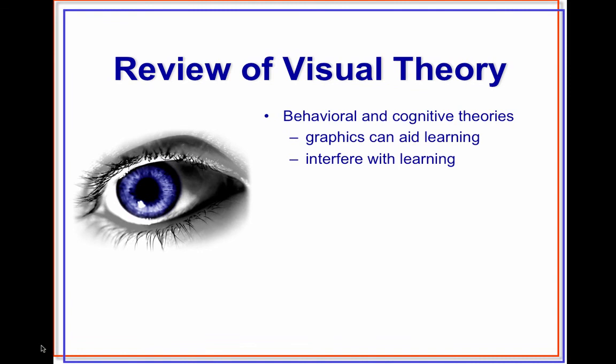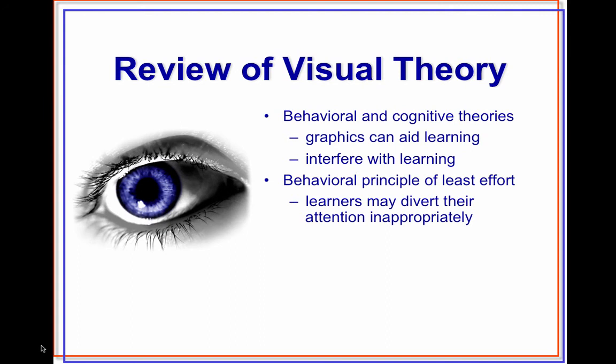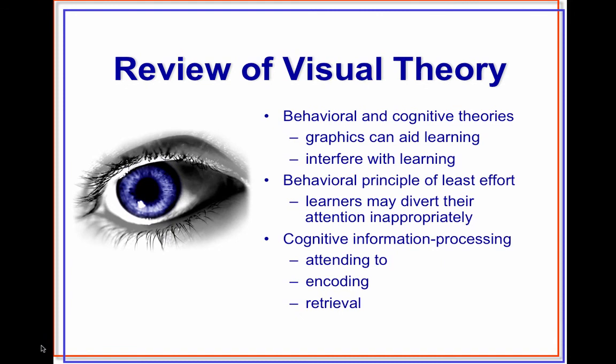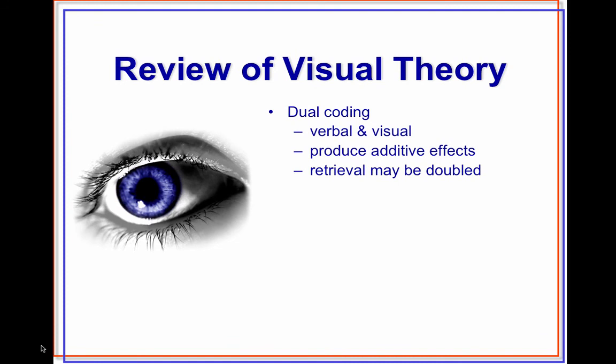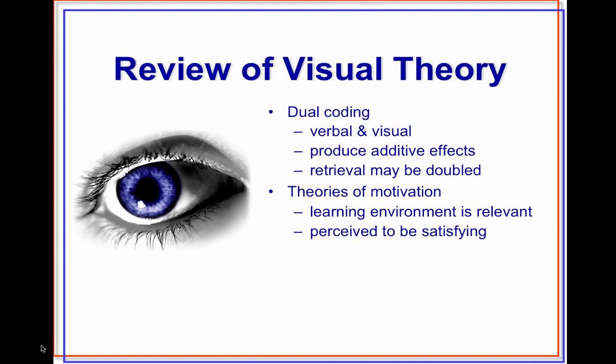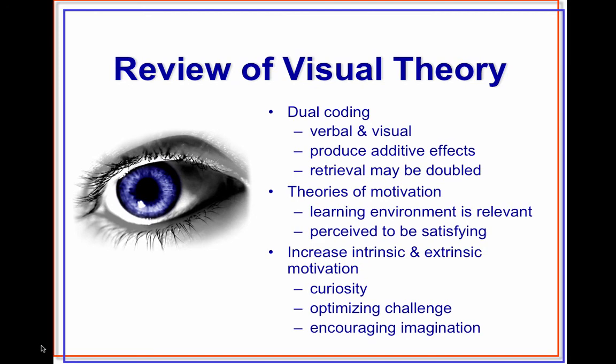Review of visual theory: behavioral and cognitive theories say graphics can aid learning, but they can also interfere. The behavioral principle of least effort says learners may divert attention inappropriately. Cognitive information processing theory says visuals will help in attending to, encoding, and retrieval. Dual coding — allowing verbal and visual tracks — may produce additive effects and double retrieval. Theories of motivation state that the learning environment is perceived as more satisfying when using images, with increases in intrinsic and extrinsic motivation, curiosity, optimizing challenge, and encouraging imagination.